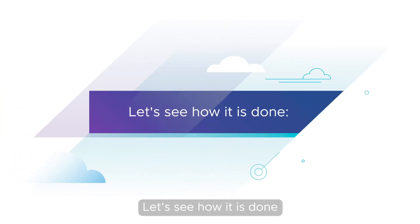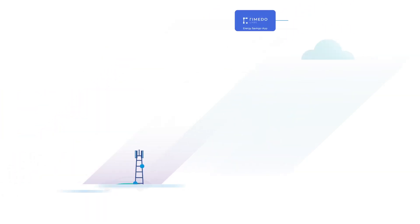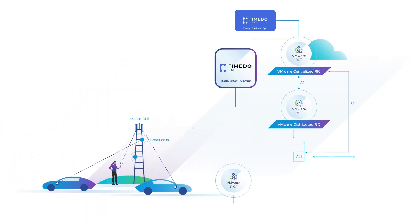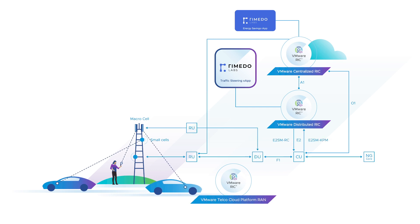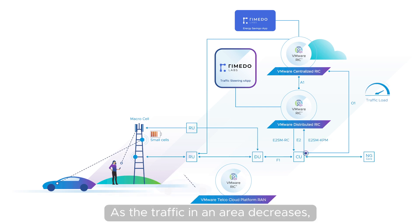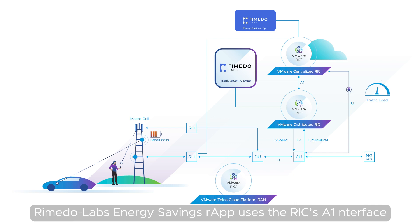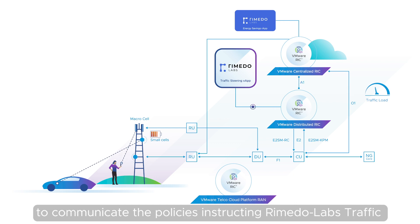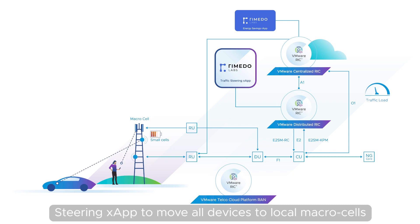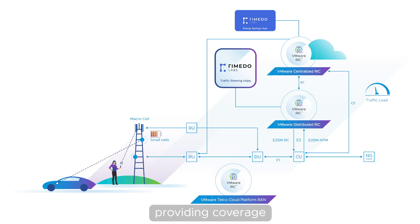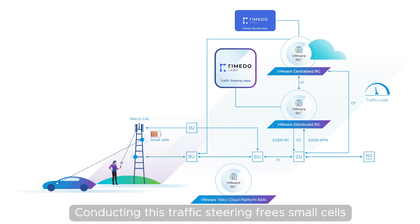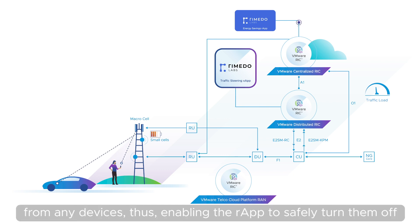Let's see how it is done. As the traffic in an area decreases, Rometo Labs' Energy Savings R-APP uses the RIC's A-1 interface to communicate the policies instructing Rometo Labs' Traffic Steering xApp to move all devices to local macro cells providing coverage. Conducting this traffic steering frees small cells from any devices, thus enabling the R-APP to safely turn them off.